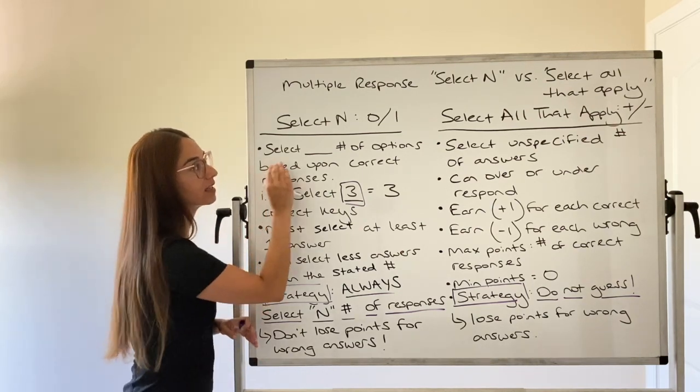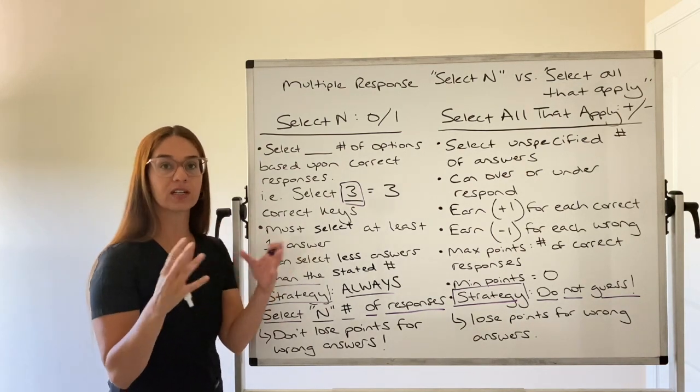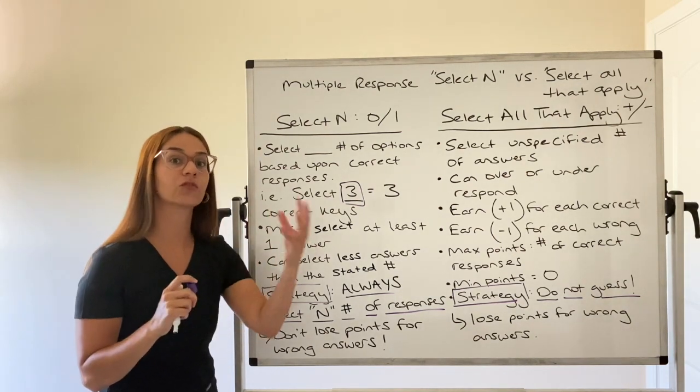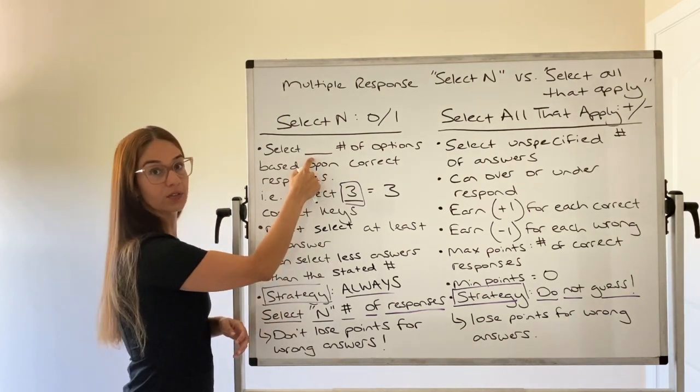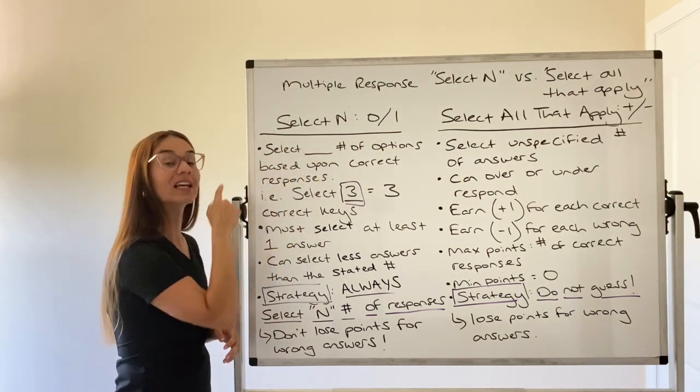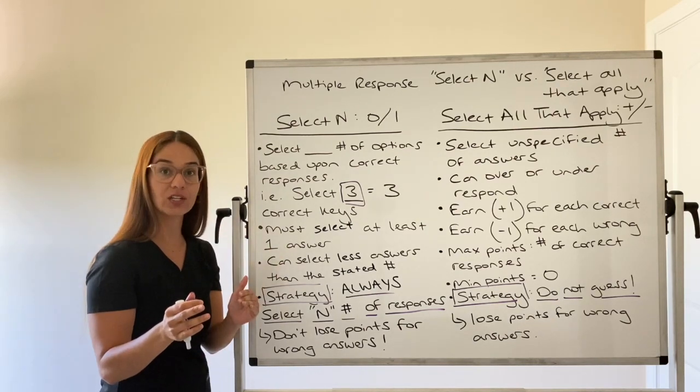Your strategy for Select N questions. Again, they will give you a question, a client scenario, and say select the best four answers, select the best two answers, whatever number they give you. And remember that number is the correct amount of answers that could be in that question. You need to select all of them.